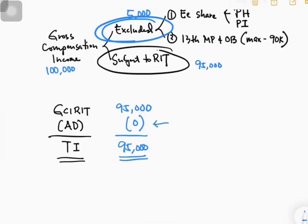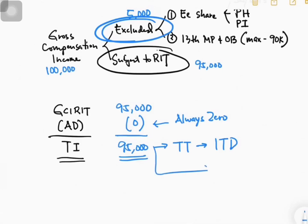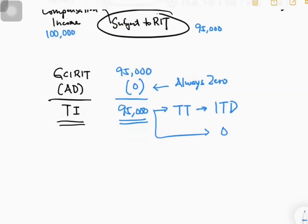After that, you don't have allowable deductions, so it's the same: your gross compensation income subject to regular income tax is also your taxable income. This is always zero because compensation income earners are not granted any allowable deductions, but they have exclusions in their gross income. Once you get your taxable income, you refer to the tax table to get your income tax due. Sometimes you don't need to compute the income tax due anymore because it automatically becomes zero — if your employee is a minimum wage earner.